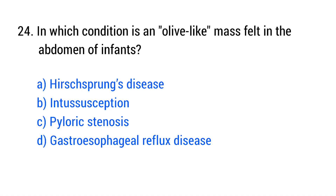Question number 24. In which condition is an olive-like mass felt in the abdomen of infants? The right answer is option C: Pyloric stenosis.